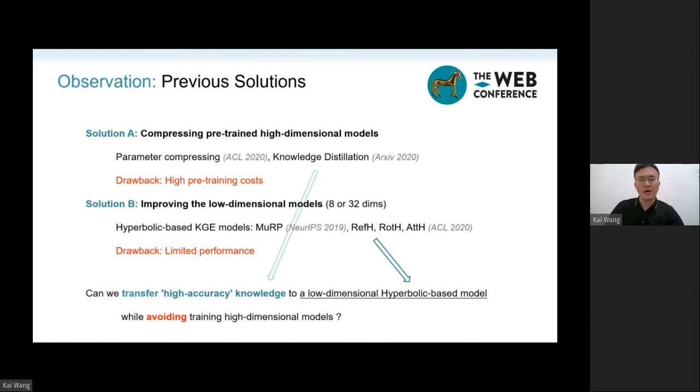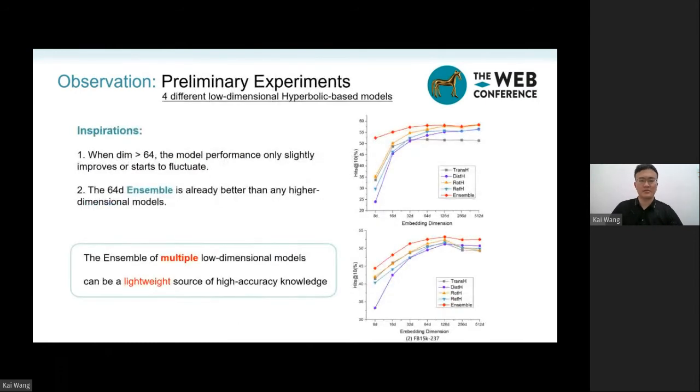Use knowledge distillation to transform the high accuracy knowledge to a low dimensional hyperbolic space model. So, there is still a question: how can we get high accuracy knowledge while avoiding training the high dimensional teacher model?